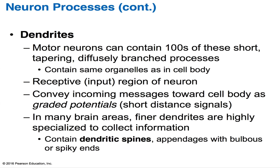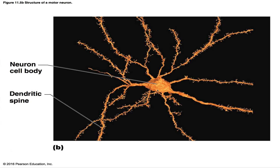Motor neurons can have hundreds of short, tapering, diffusely branching dendrites — the main receptive regions of the neuron. Electrical signals arrive at the neuron via dendrites, then travel to the cell body as a graded potential (a short-distance signal, not yet an action potential). In many brain areas, finer dendrites have thorny appendages with bulbous or spiky ends called dendritic spines, which represent synaptic contact points with other neurons.